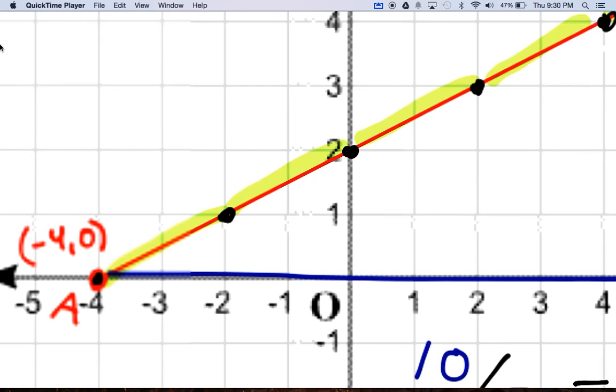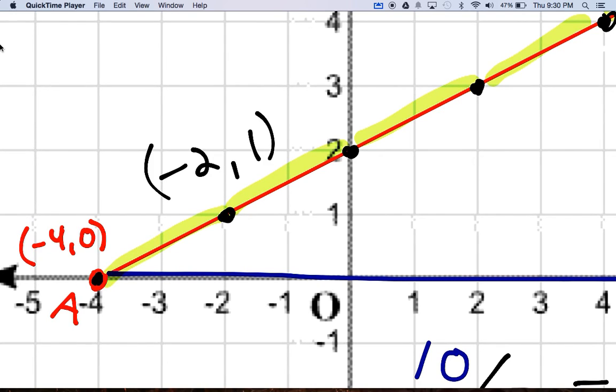And so the coordinates of this point, as we can see, is negative two, comma one. So that's our answer to our problem here, negative two, comma one.